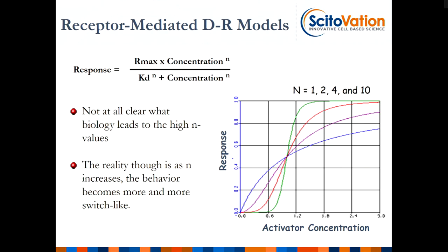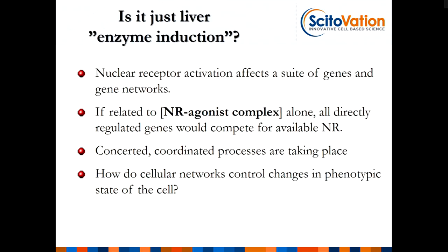We have a ligand binding a receptor and that acts as a transcriptional factor. But it's not just one single enzyme that's being induced — there are hundreds, sometimes thousands. If it were a process by which you create receptor-bounded ligand and bind to a thousand individual promoter areas, that's a competitive problem. This is a concerted issue that goes on in the cell — it goes from one state to another. What's the process by which this can occur, and how do cellular networks change to control these phenotypes?